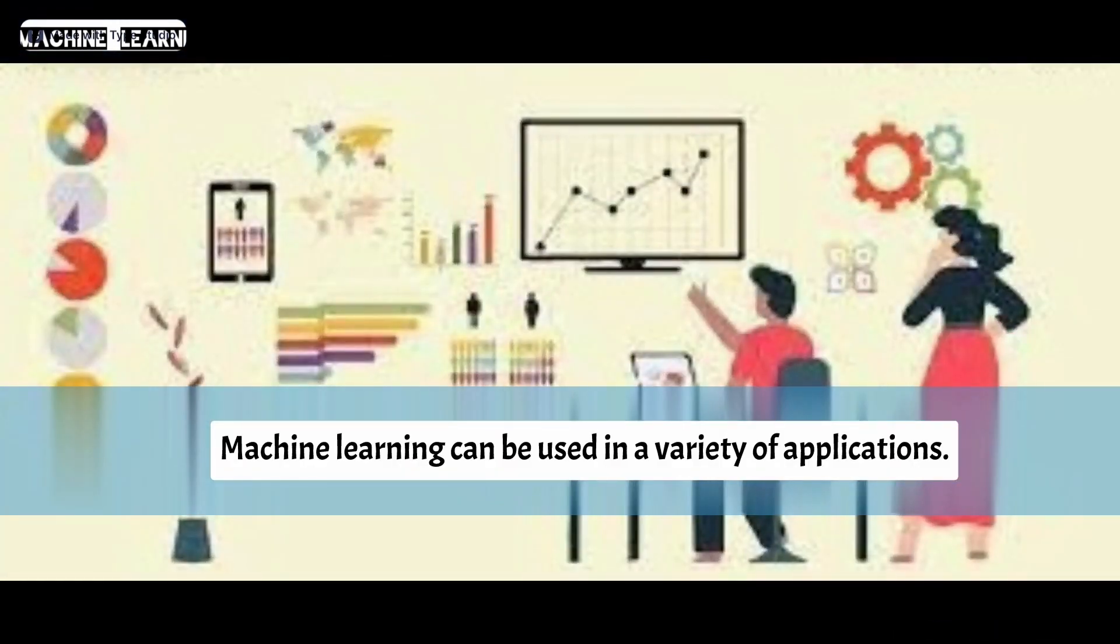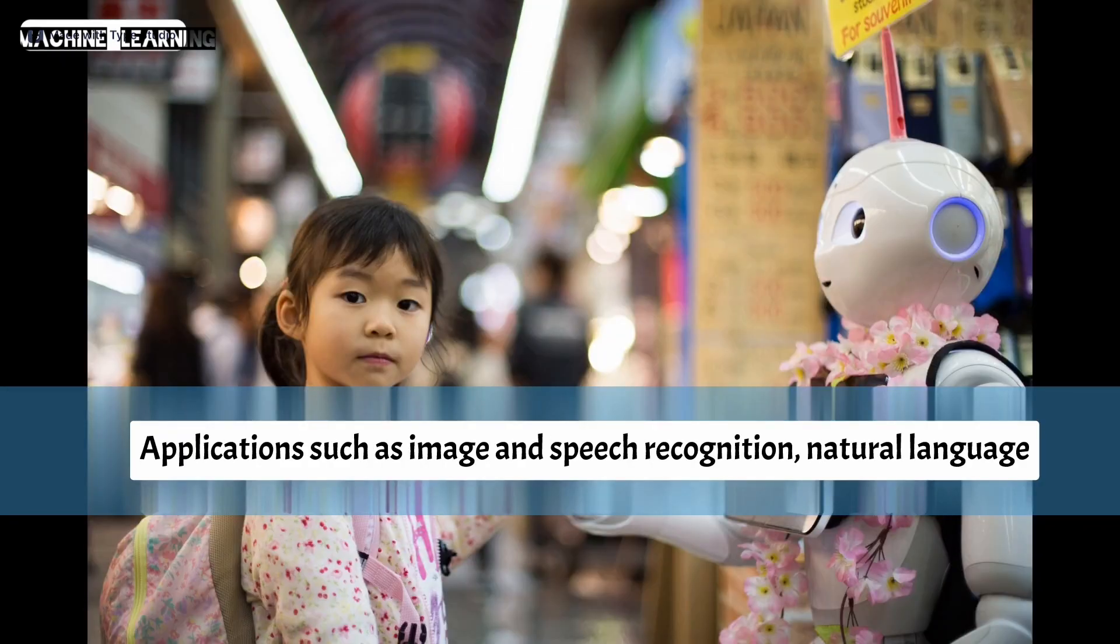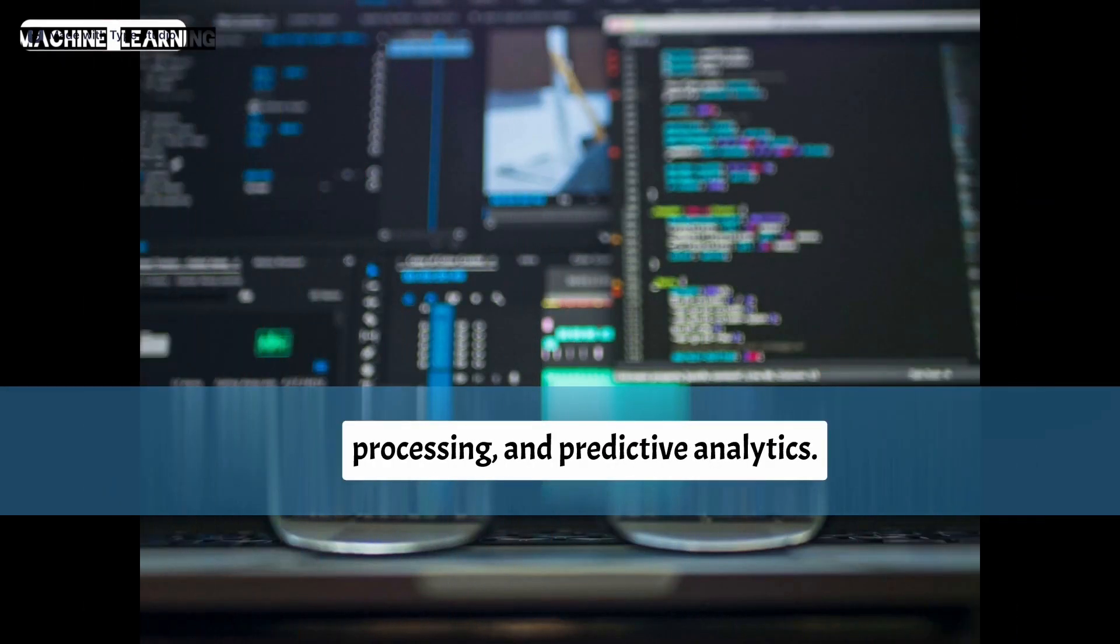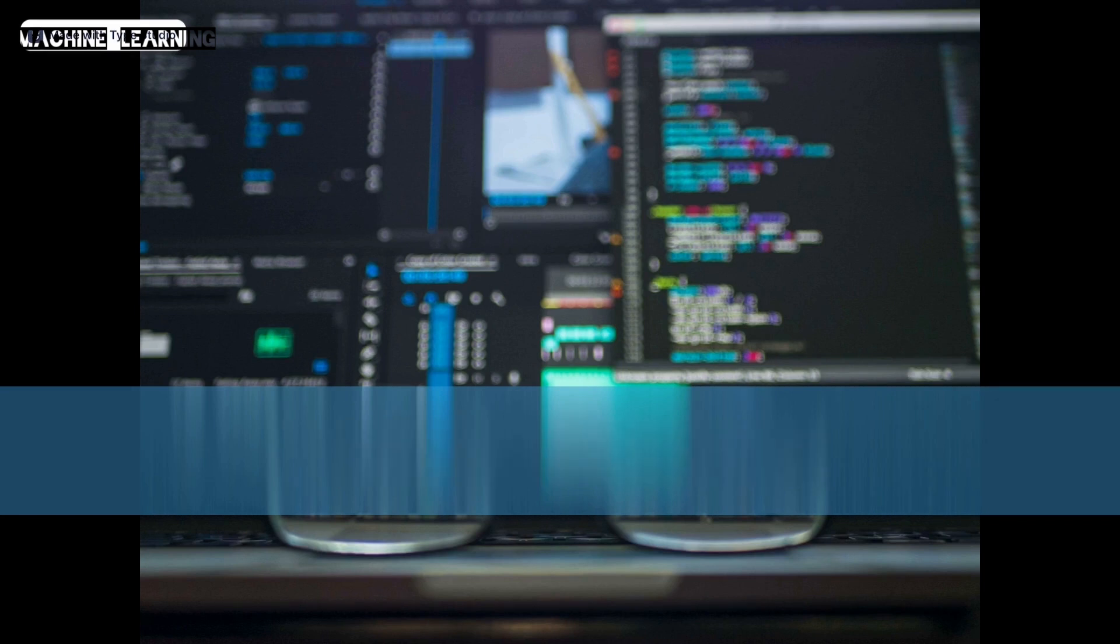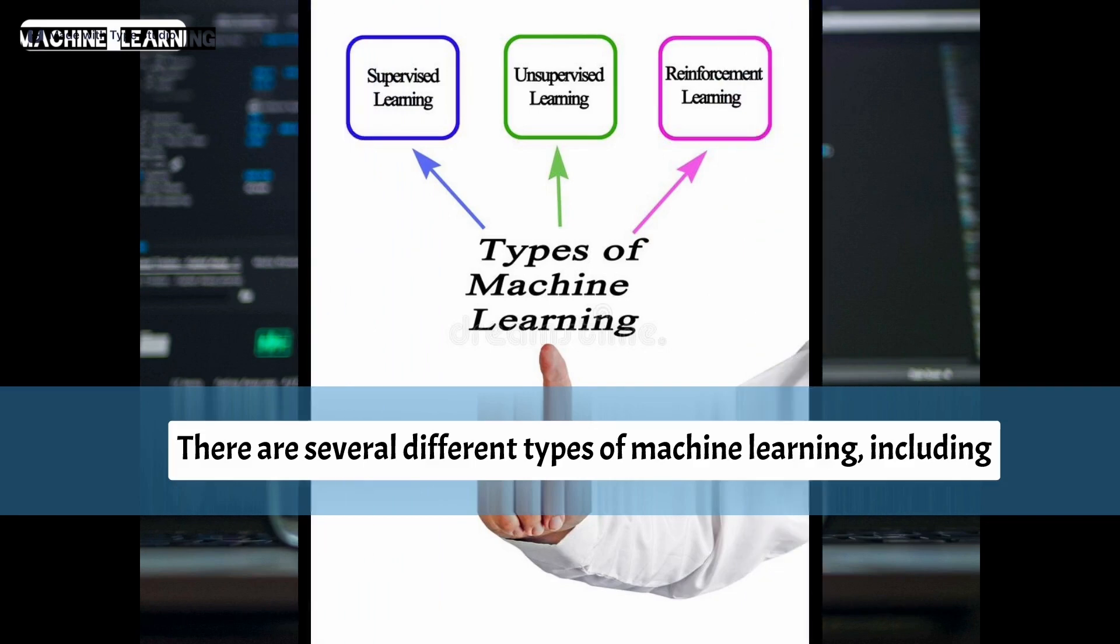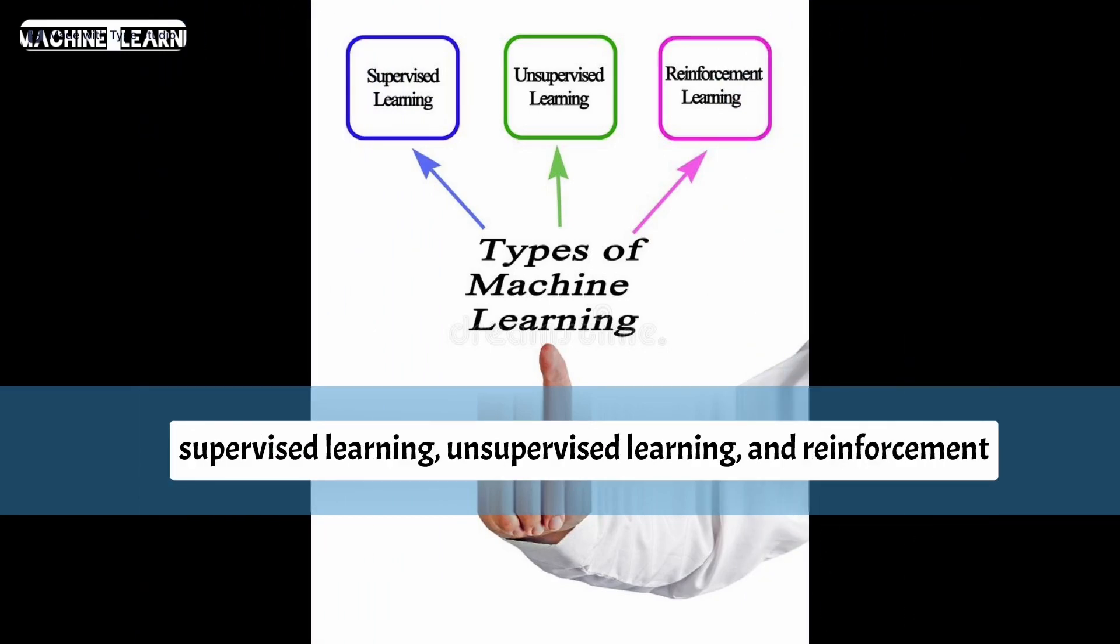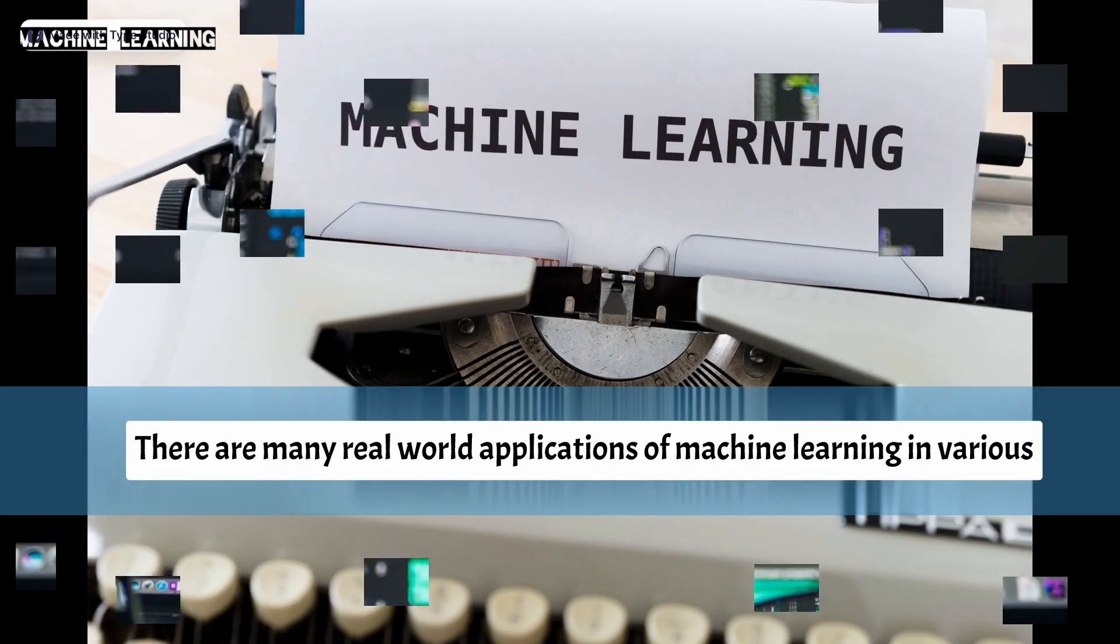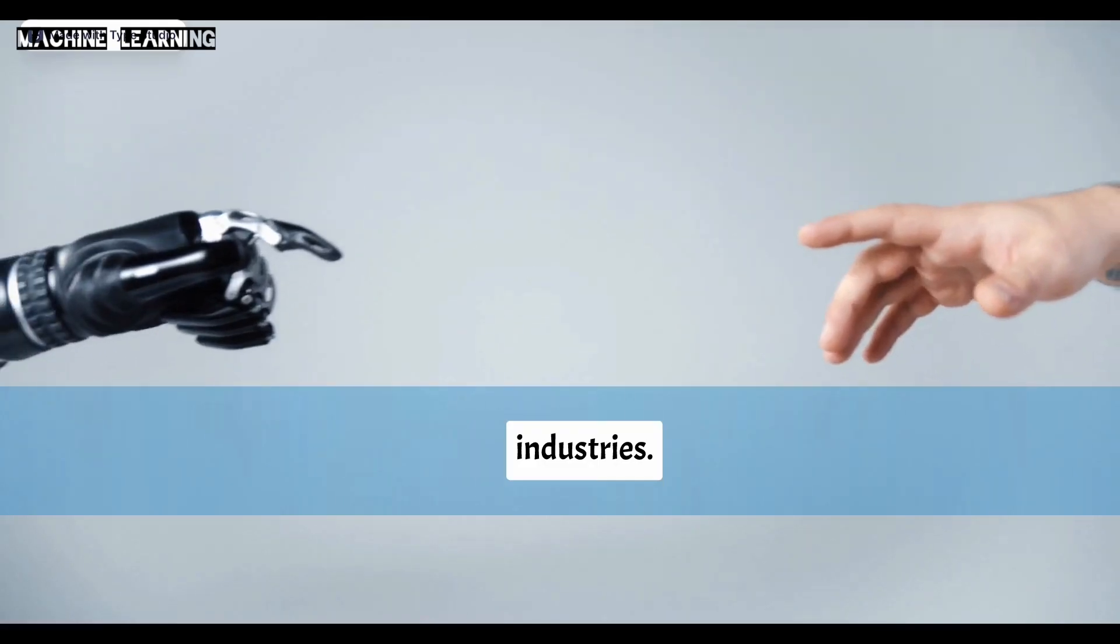Machine learning involves the use of algorithms and statistical models to analyze data and make predictions or decisions. It can be used in a variety of applications, such as image and speech recognition, natural language processing, and predictive analytics. There are several different types of machine learning, including supervised learning, unsupervised learning, and reinforcement learning.